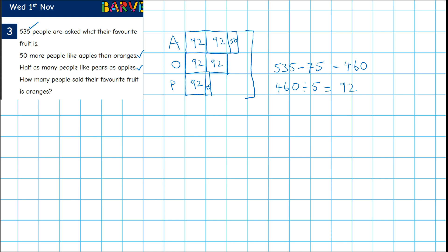So how many people said their favorite fruit is oranges? Well, that's this bit here, oranges. And oranges is 92 times 2, which is 184. So my final answer is 184.